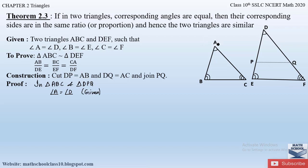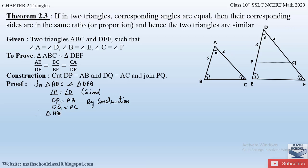By construction, AB = DP and AC = DQ. We now have an included angle D between sides DP and DQ equal to angle A between sides AB and AC. Therefore, triangle ABC is congruent to triangle DPQ by the SAS (Side-Angle-Side) criteria.